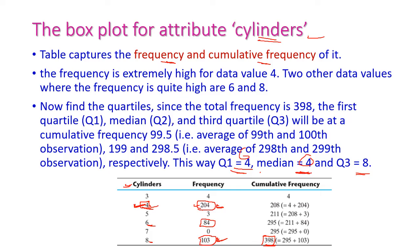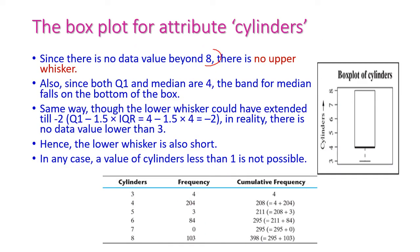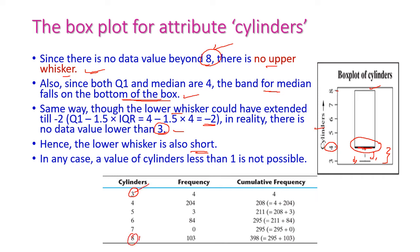Q3 is 8. There is no data beyond 8, hence there is no upper whisker. Q1 is 4 and median is also 4, so the median band lies at the bottom of the box, meaning more records contain the value 4. The lower whisker is very short — it can be around minus 2, the nearby value of 3 — and values below 3 or above 8 are not possible.